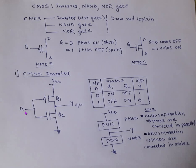If input A is 0 (low), then Q1 is on and Q2 is off. Q1 on means it acts as a short circuit, so the potential at output Y is approximately equal to VDD — that is, logic 1. In the reverse case, if A is 1, Q1 will be off, meaning this circuit is disconnected from supply VDD, so the output voltage is 0 — logic 0. So if A is 0, output is 1; if input is 1, output is 0. This is called an inverter.